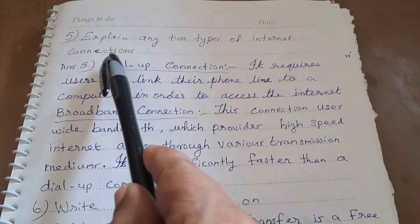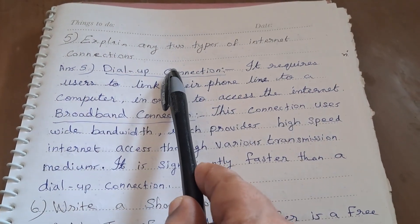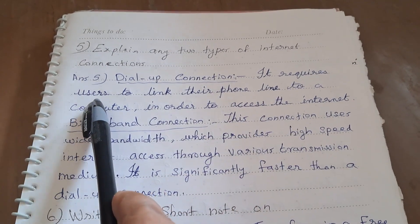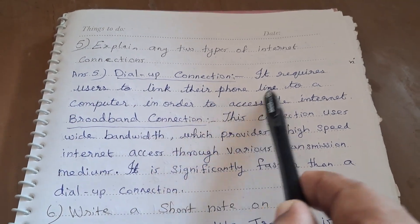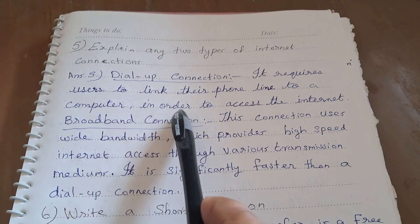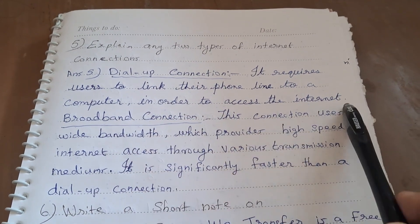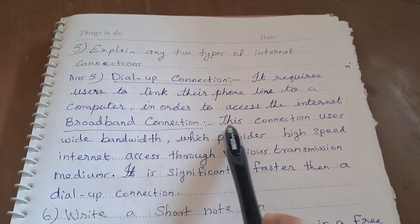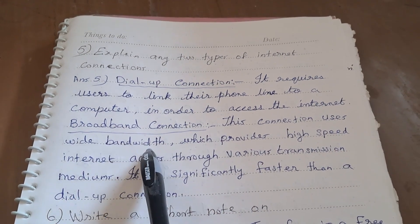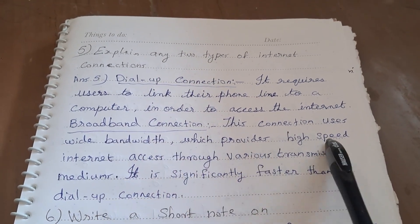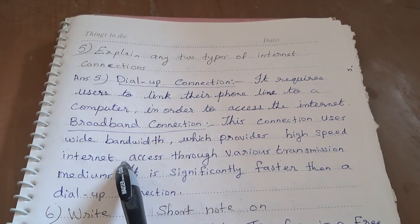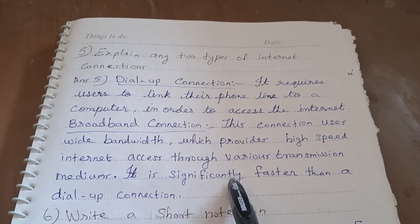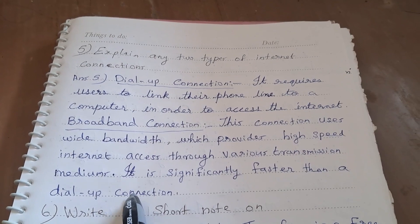Explain any two types of internet connections. First: Dial-up Connection — it requires the user to link their phone line to a computer in order to access the internet. Second: Broadband Connection — this connection uses wide bandwidth which provides high-speed internet access through various transmission mediums. It is significantly faster than a dial-up connection.